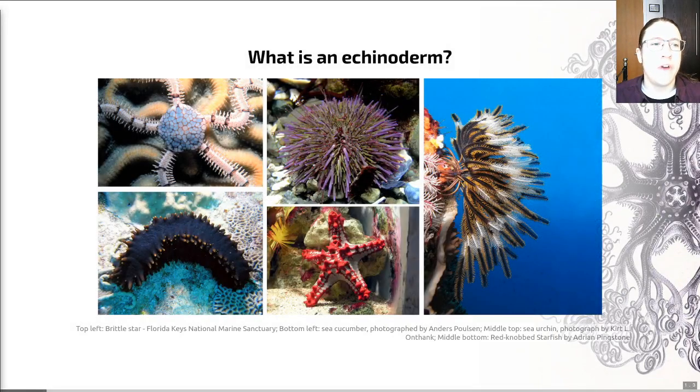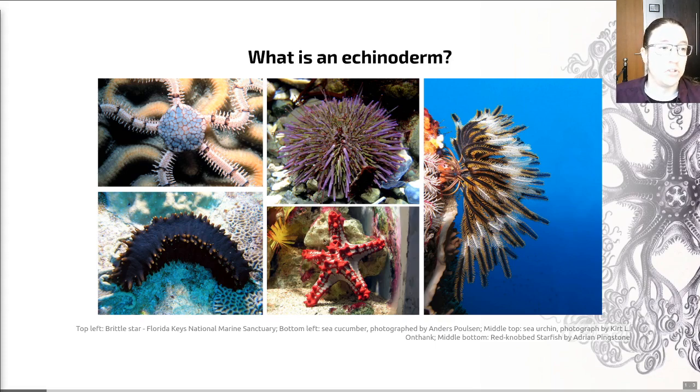There are five major groups of echinoderms that are alive today. That includes the sea urchins you can see here, the starfish, the sea lilies or crinoids—I'll probably use those two interchangeably because crinoid is quite a commonly used term. They also include weird creatures called sea cucumbers. If I accidentally say sea slugs during this lecture that is incorrect—sea slugs are mollusks, these are sea cucumbers. And they also include the brittle stars.